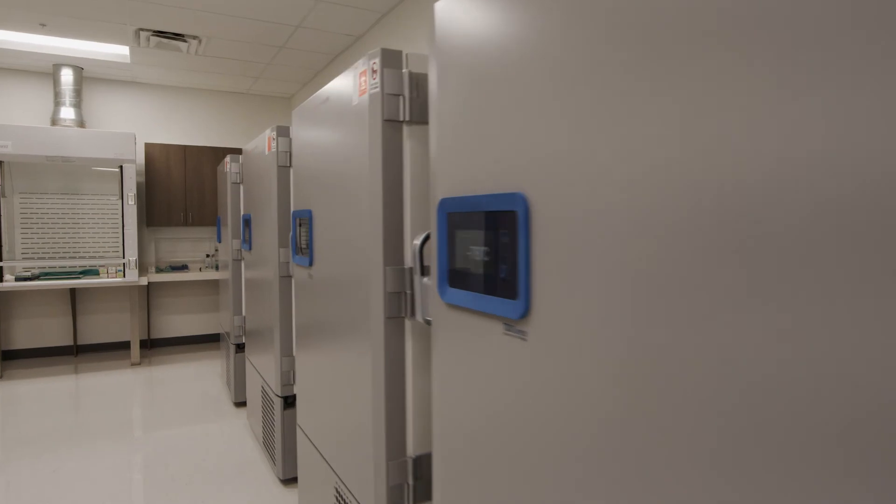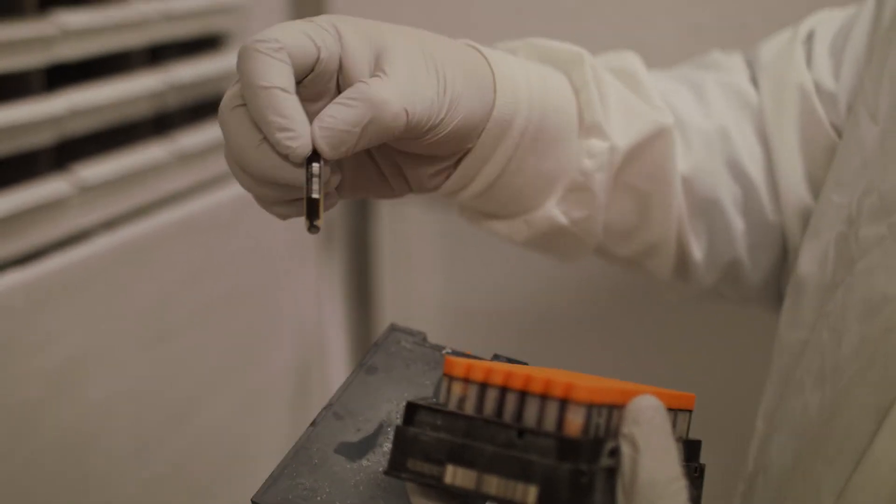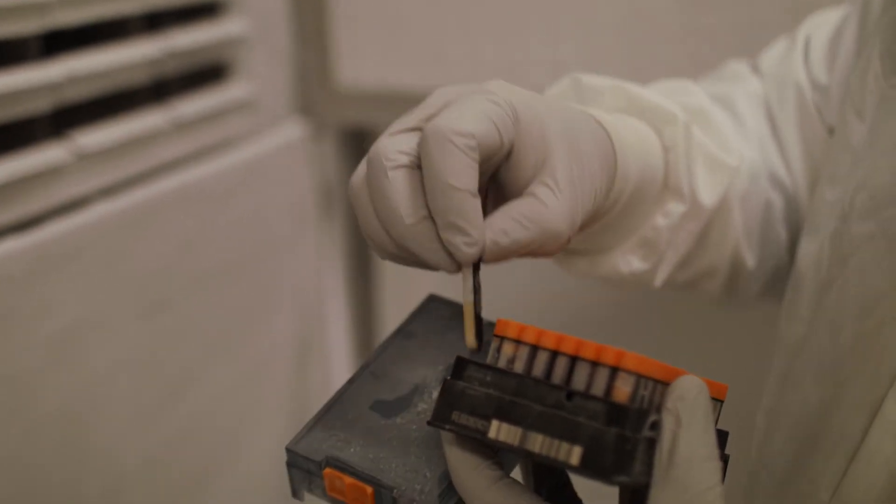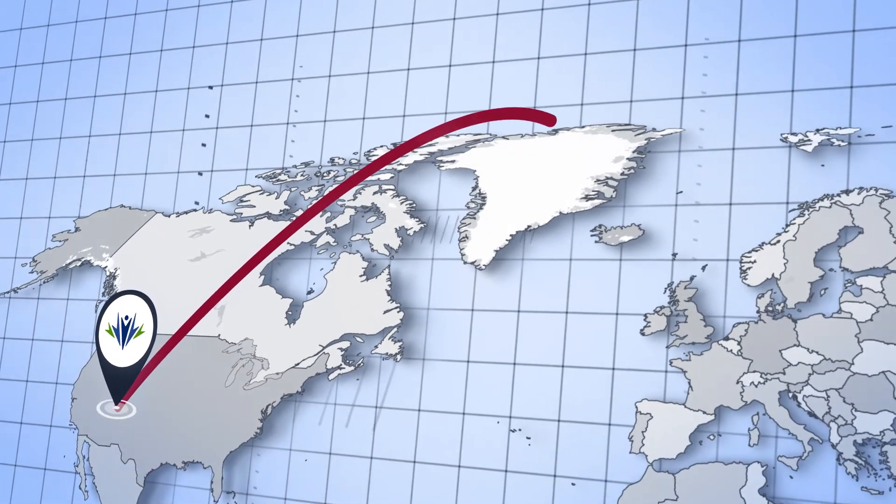Once we pour it off we freeze those samples at minus 80 degrees Fahrenheit, save them for a week or a number of weeks until we get enough samples that we can then pack these up, put them in big shipping containers full of dry ice and send them off to decode in Iceland.